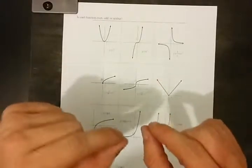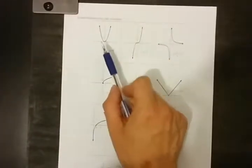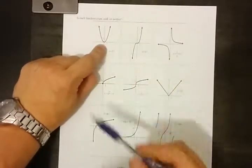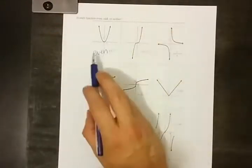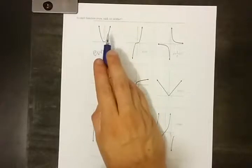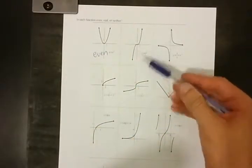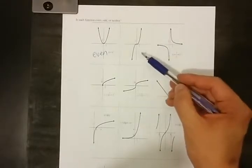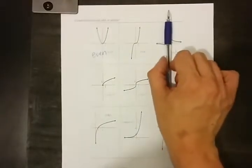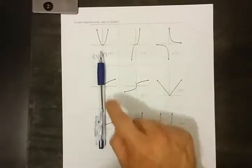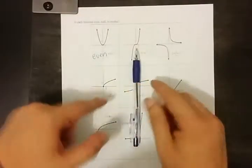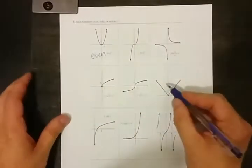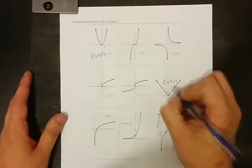Which of these are perfectly symmetrical around the y-axis? Here, no matter if I'm on the left or the right, this graph is exactly the same. This is an even function because the y-axis is acting like a mirror — whatever's on the left is exactly the same as what's on the right. That is not the case here: on the left side we're going downward, on the right side we're going upward. It is not an even function.